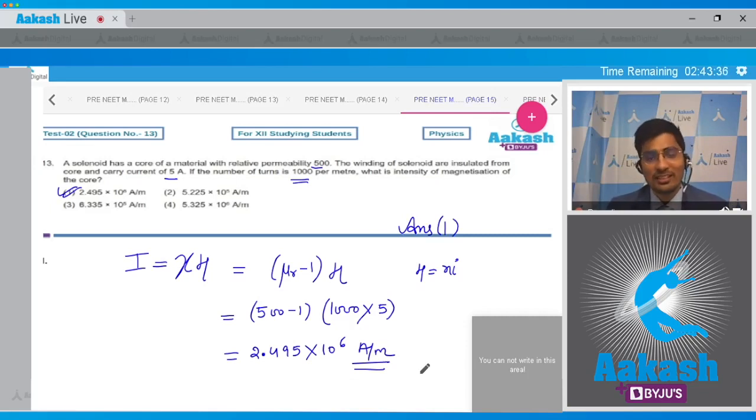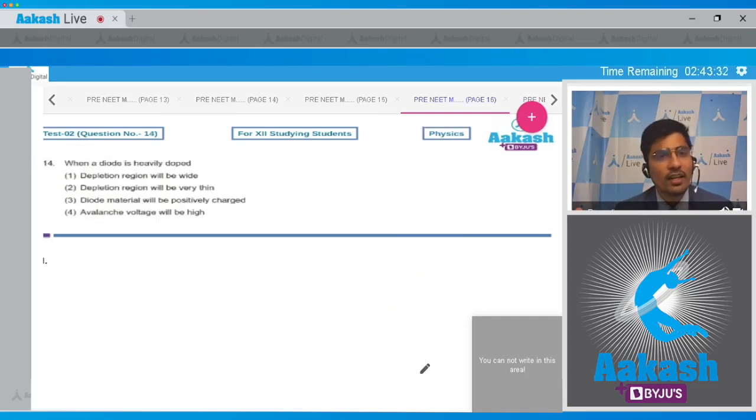Moving on to question number 14. Question 14 says when a diode is heavily doped, and the four options are: depletion region will be wide, depletion region will be very thin, diode material will be positively charged, or avalanche voltage will be high.